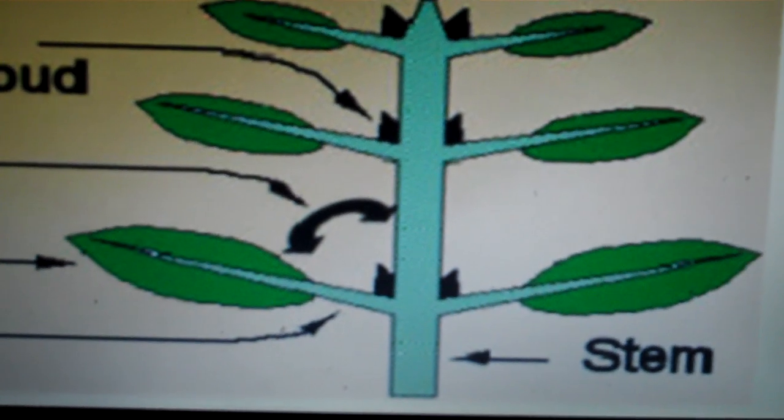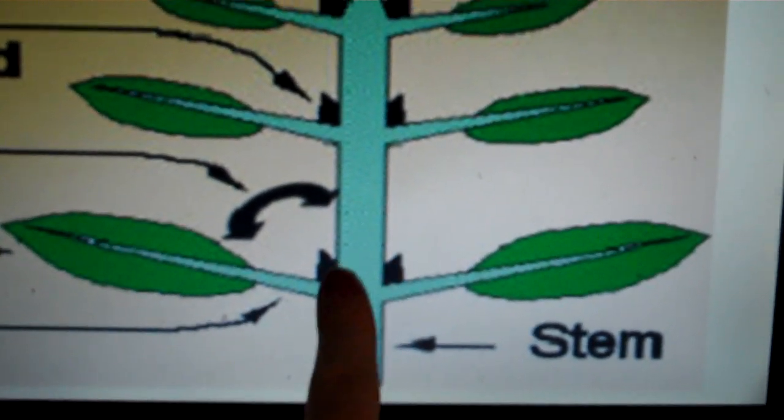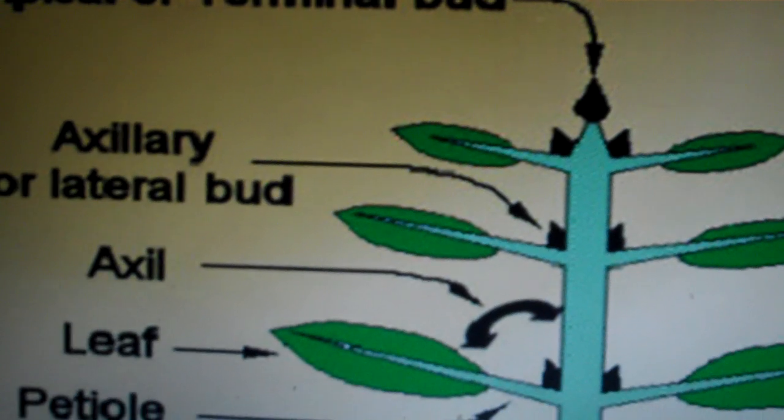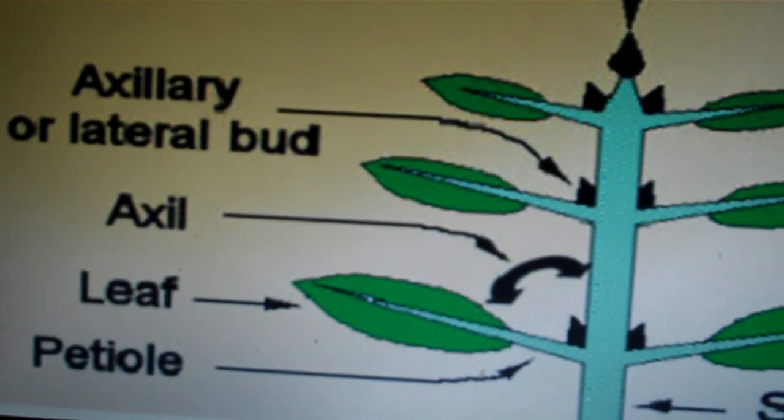In the area between the petiole and the stem, we have axillary buds that are responsible for the lateral growth of the plant.